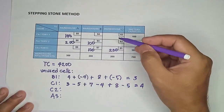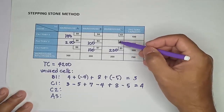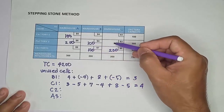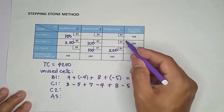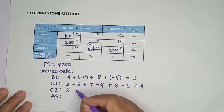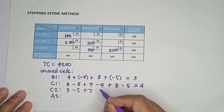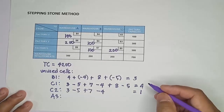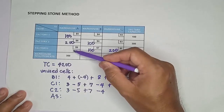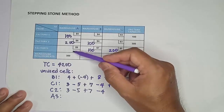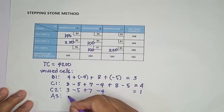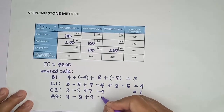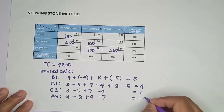The next empty cell is C2. Its loop is from C2 to B2, to B3, to C3, going back to C2. The sum of the transportation costs is: 3 minus 5 plus 7 minus 4, which is equal to 1. The last empty cell is A3. Its loop gives: 9 minus 8 plus 4 minus 7, which is equal to negative 2.